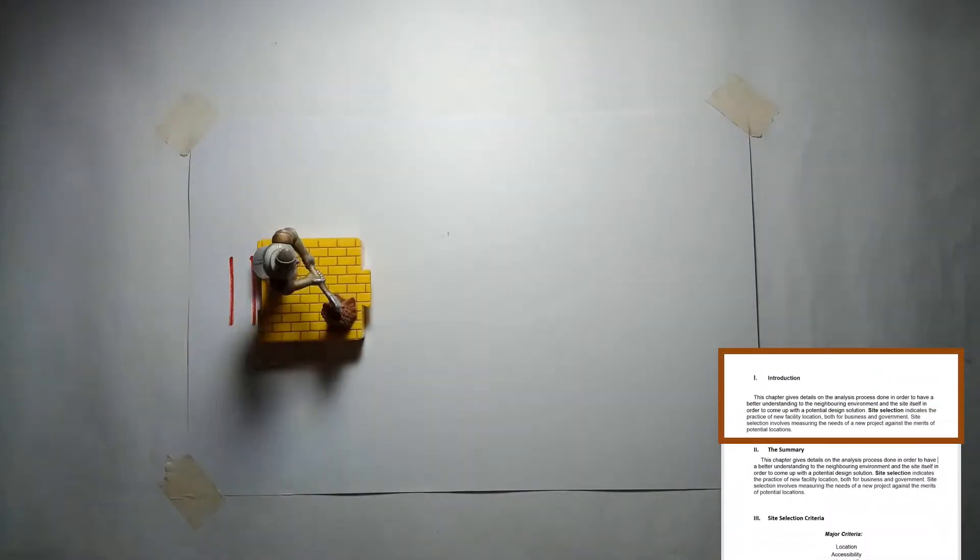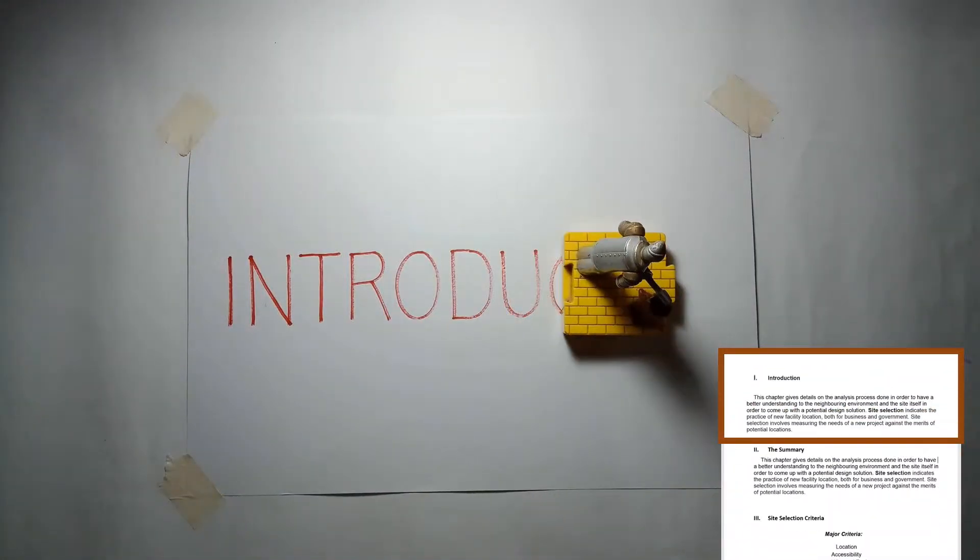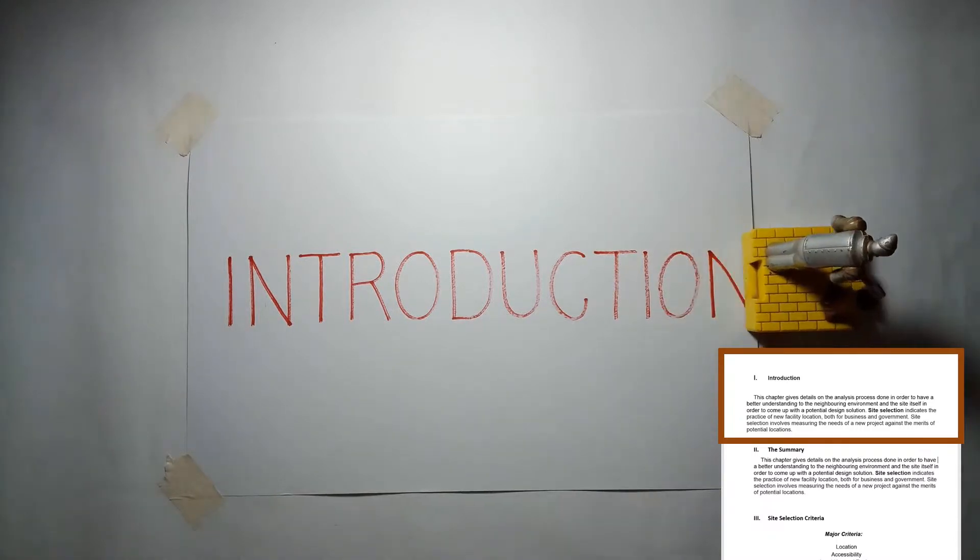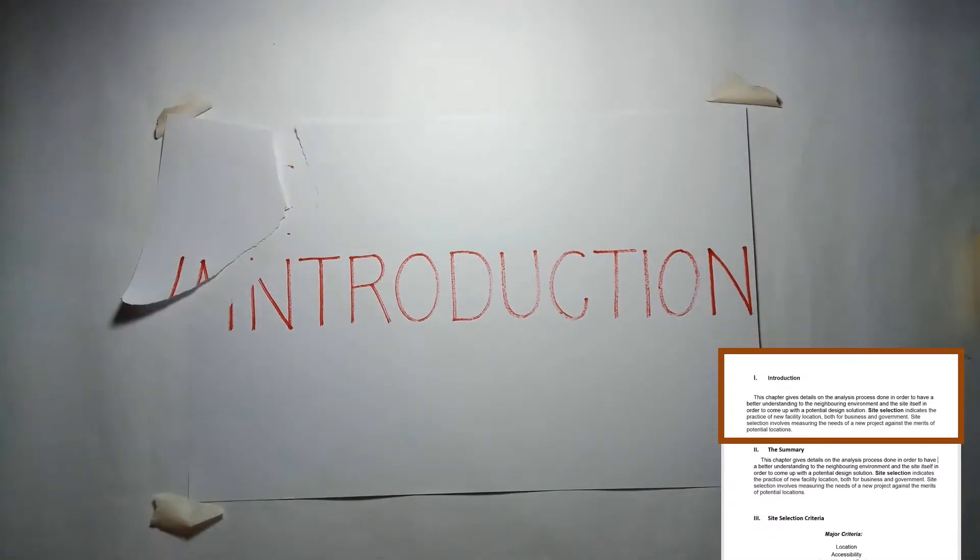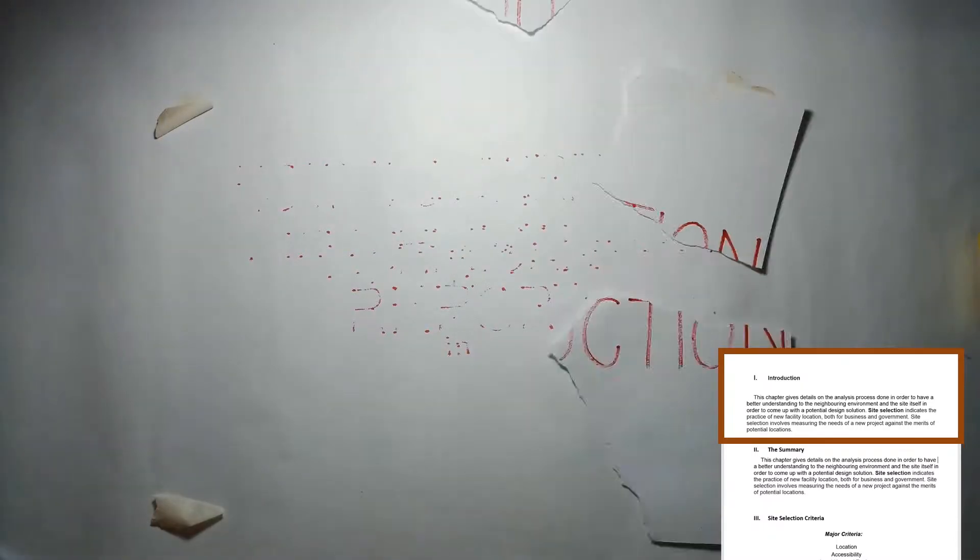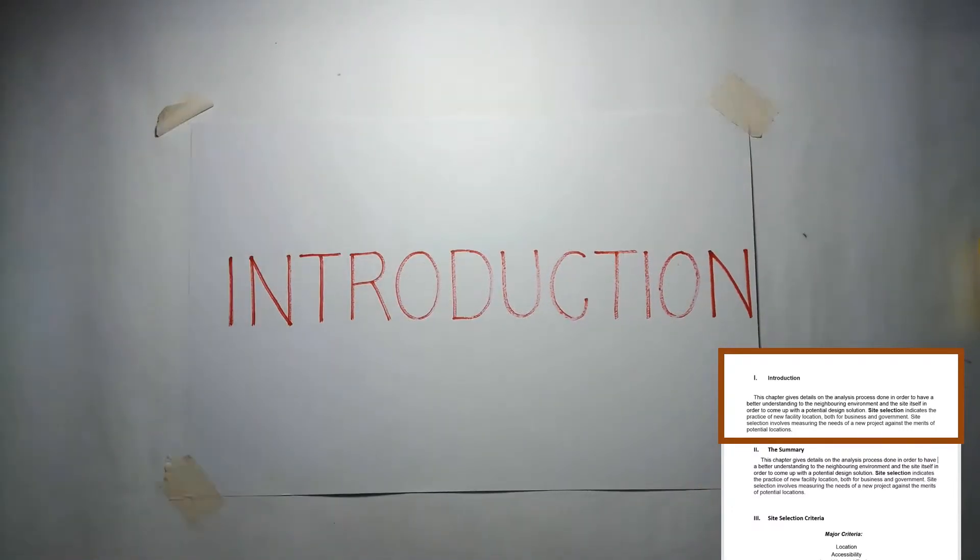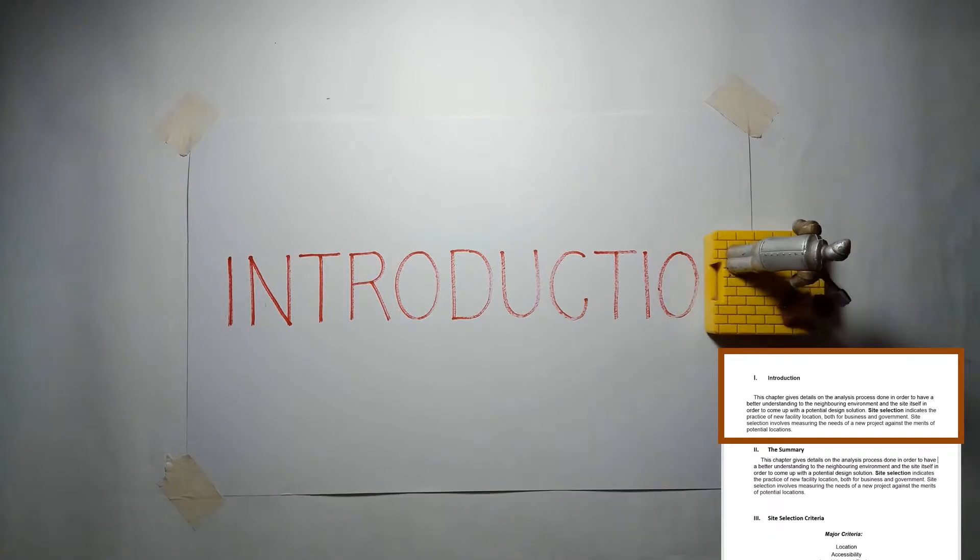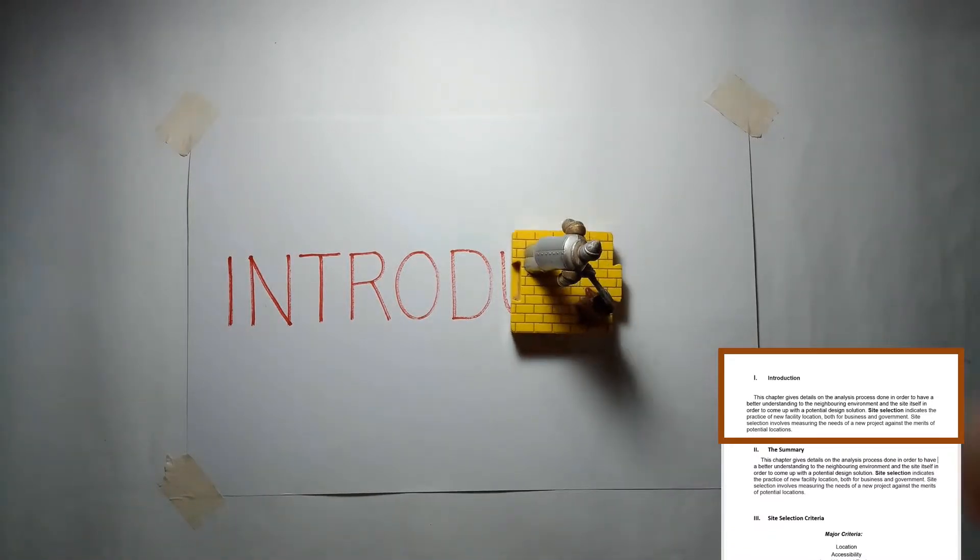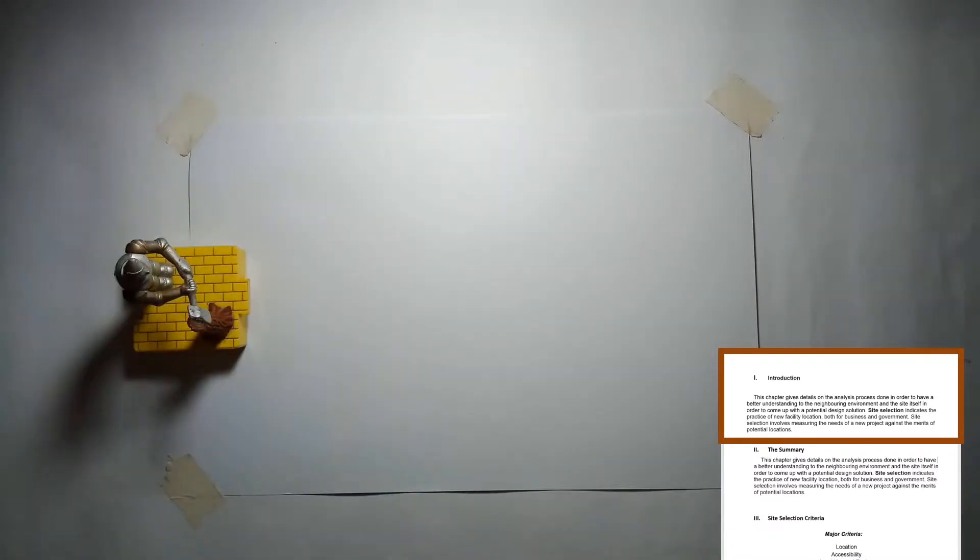In the introduction, you are supposed to highlight the main aims of the paper to the reader. Let the reader understand the purpose of you writing the report. You can also comment on the flow of the report so that the reader can know what to expect. You should avoid copying introduction from others and instead come up with your own.